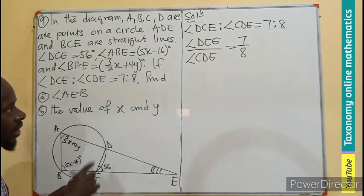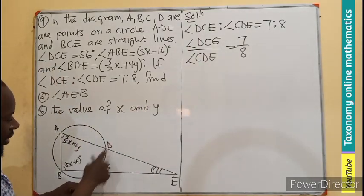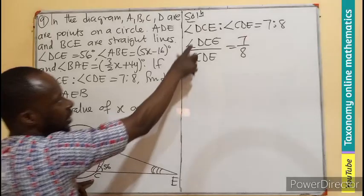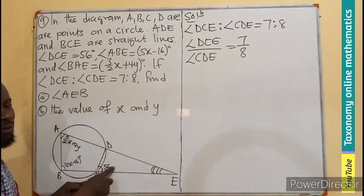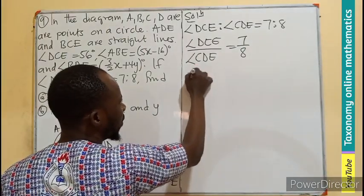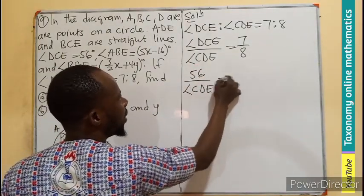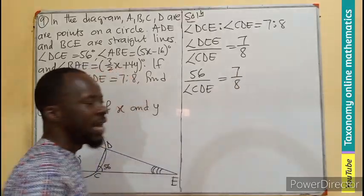And looking at it carefully, we are having one of the angles. They said DCE is known as 56. So I only substitute 56, angle CDE equals 7 on 8.